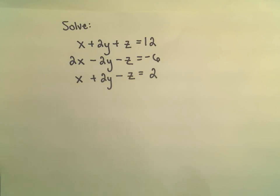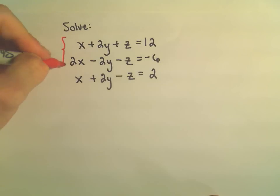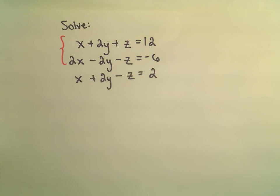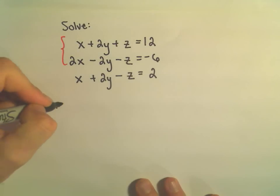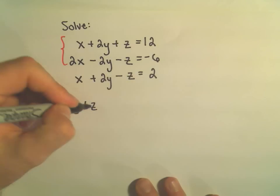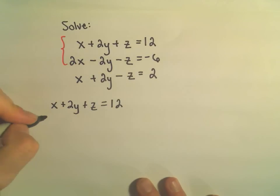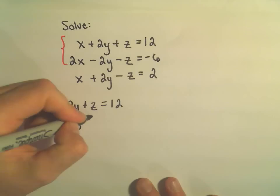Again, I think this one's going to be a little nice because, notice if we, for example, take the first two equations. So, x plus 2y plus z equals 12. Again, what I want to do is add them up, and hopefully some of the variables are going to cancel out.